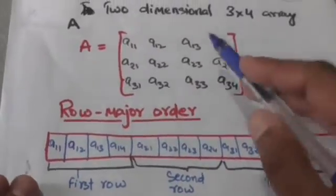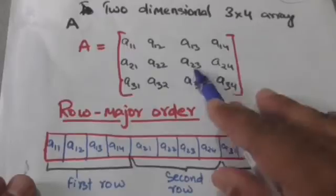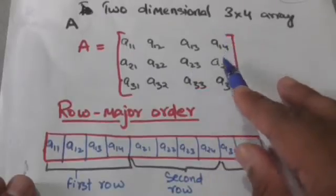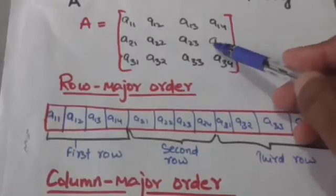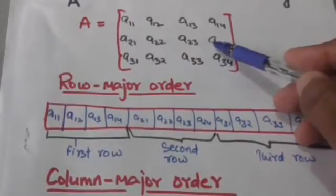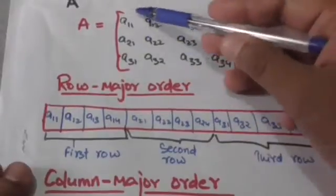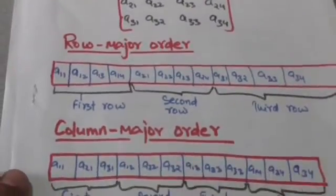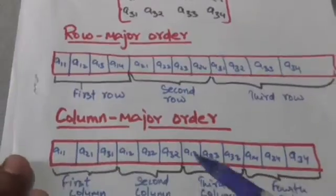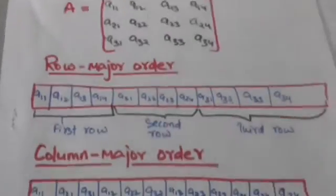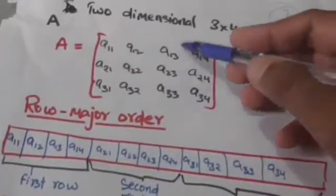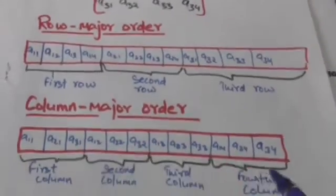If this two-dimensional array A is stored in column major order, then A will be stored in memory column by column. The first column of array A will be stored, then the second column will be stored, then the third column will be stored, then the fourth column will be stored.